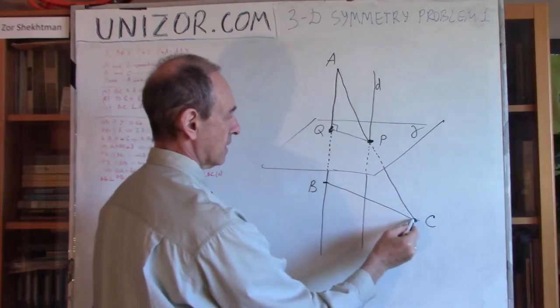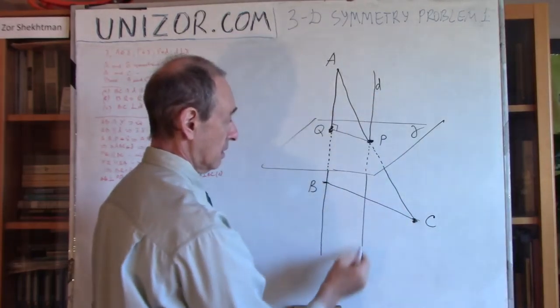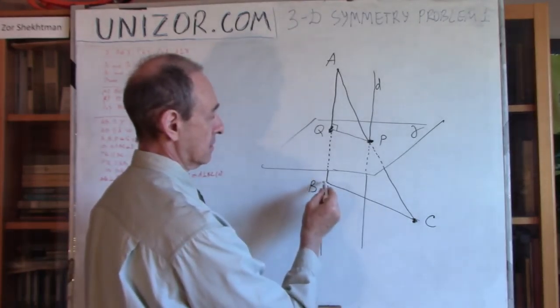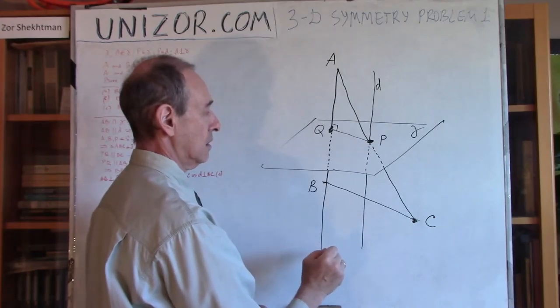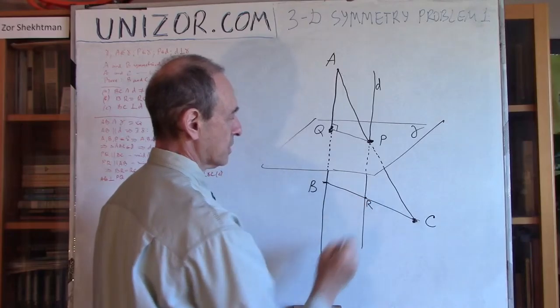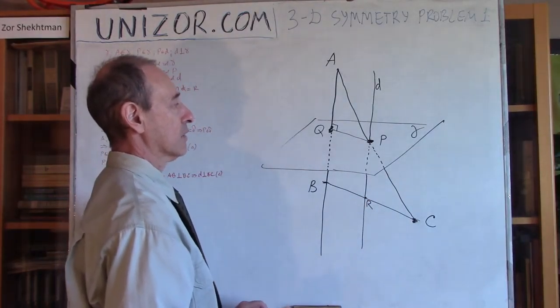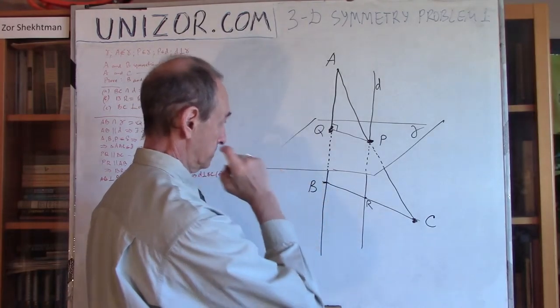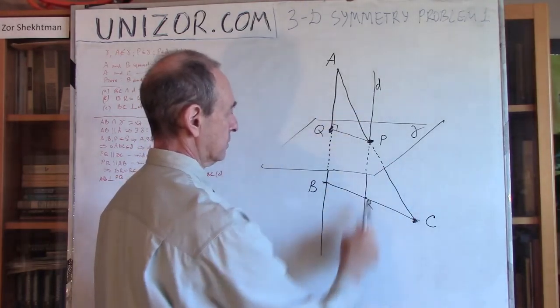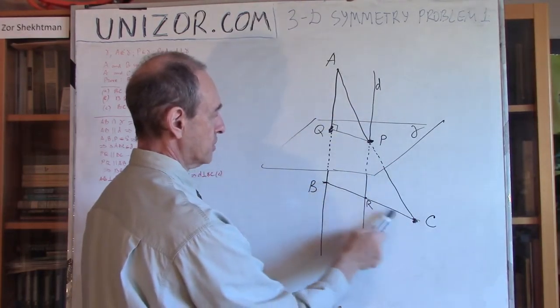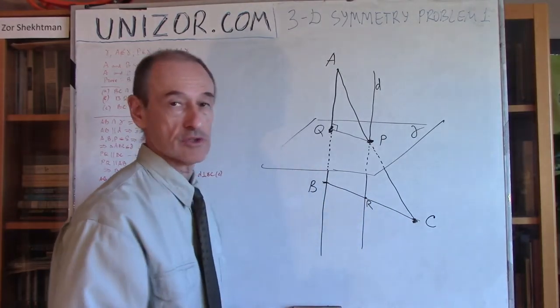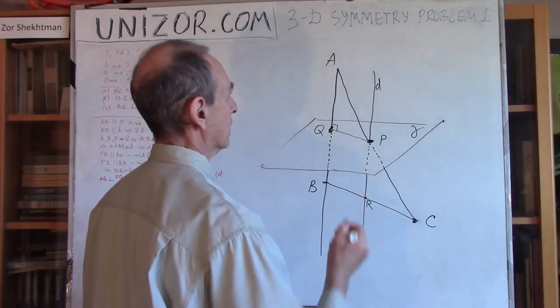Number one: that this segment BC actually intersects with D. Number two: that BC and D are perpendicular. And the third: that B and C are on the same distance from intersection point R. So they intersect, they are perpendicular to each other, and B and C are on the same distance from the intersection point.